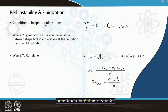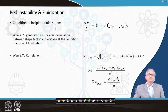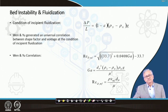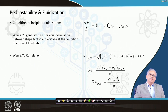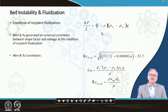Regarding incipient fluidization: the blast furnace is a packed bed, but if you have fines, some of them can get fluidized. If you increase the gas flow rate through a packed bed, the pressure drop increases due to greater frictional dissipation. This pressure drop keeps increasing until it just becomes equal to the apparent weight of the bed — this is the condition of incipient fluidization.